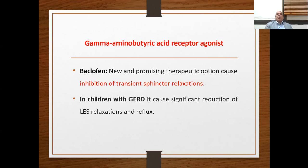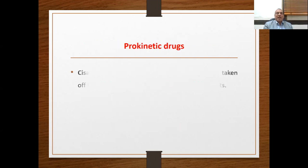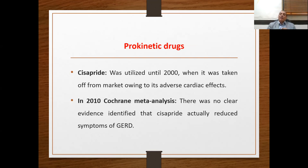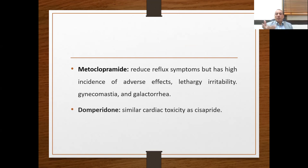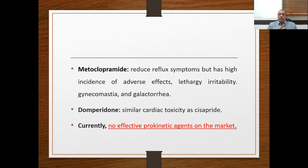The second drug therapy is gamma-aminobutyric acid receptor antagonist, or baclofen — a newer drug that inhibits transient lower sphincter relaxation, used in children with GERD and refractory GERD. The third type is prokinetic drugs. Cisapride was widely used but then withdrawn from the market due to cardiac toxicity side effects. Metoclopramide and domperidone also have similar cardiac toxicity. Currently, no effective prokinetic agent is on the market to treat gastroesophageal reflux.